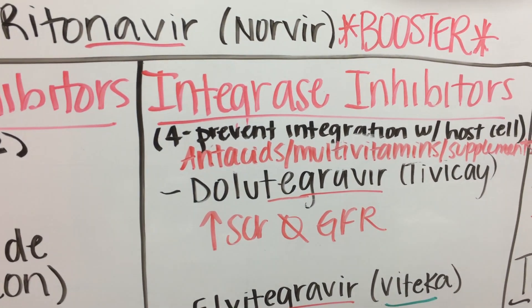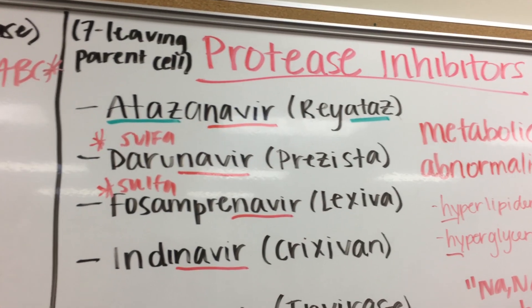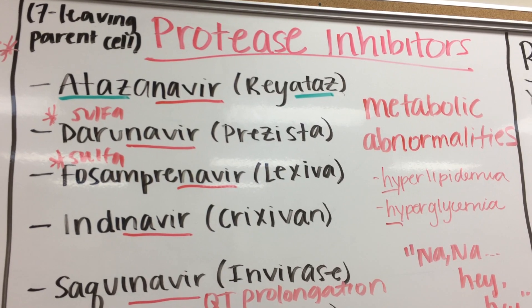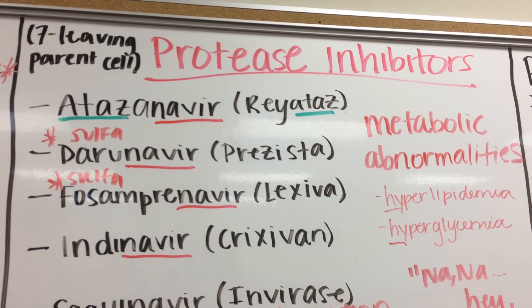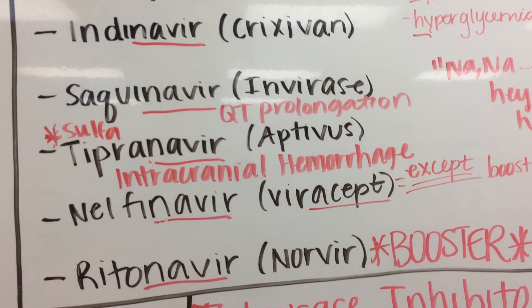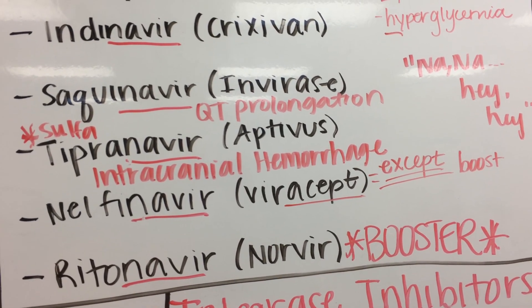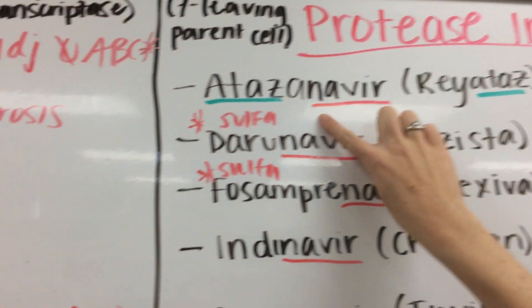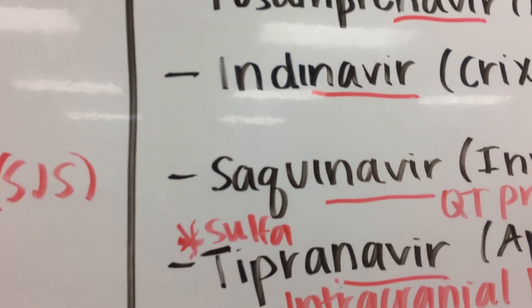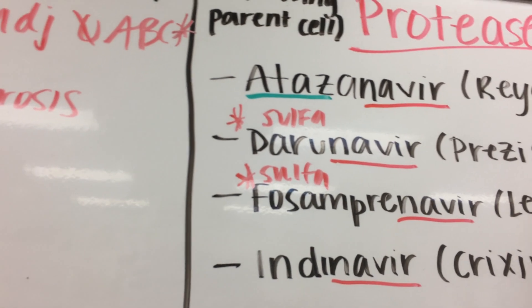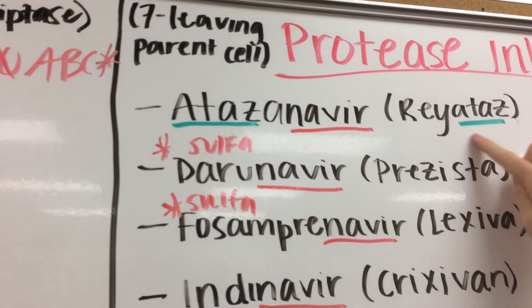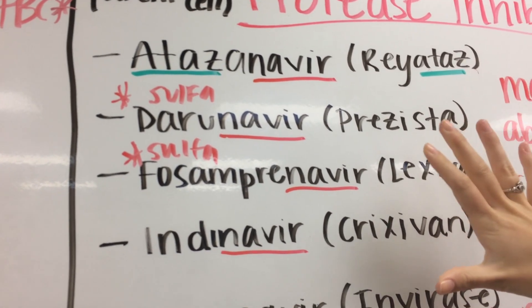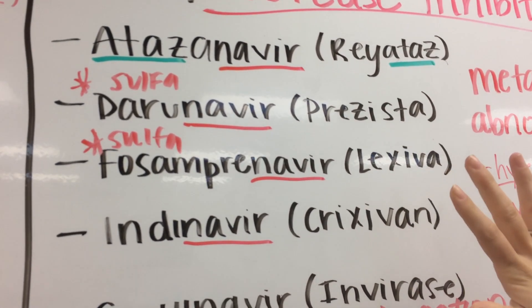Our last class is the protease inhibitors. Protease is an enzyme that cleaves the new cell from the parent cell, so by inhibiting protease, we inhibit the ability of the newly infected cell to leave. All medications in this class end in the stem '-navir.' We have atazanavir (Reyataz) — 'ataz' appears in both brand and generic. Within this class, we need to be aware of sulfa allergies. Darunavir requires attention for sulfa allergy, as does fosamprenavir.